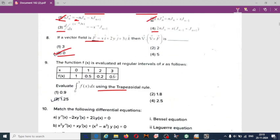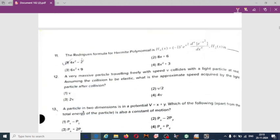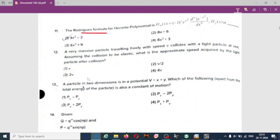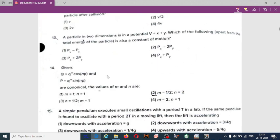This question is very important - many times it has been asked: Q equal to q to the power m cos(nP) and P equal to q to the power n sin(nP) are canonical. The values of m and n are - if you solve these canonical equations you will get m equal to 1/2 and n equal to 2. Option 2 is correct.